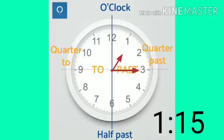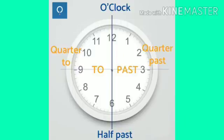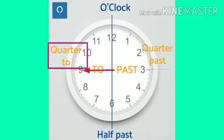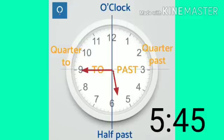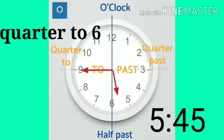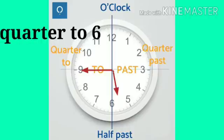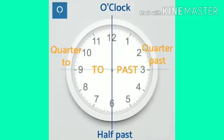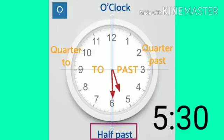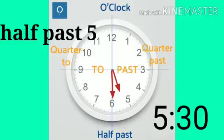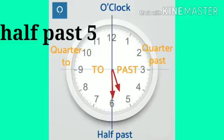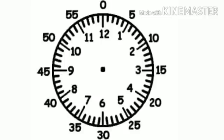we say quarter past 1. At minute 45, we say it's quarter to the next hour. For example, 5:45, we say it's quarter to 6, or 15 minutes before 6. At minute 30, we say it's half past 5, or half an hour after 5.